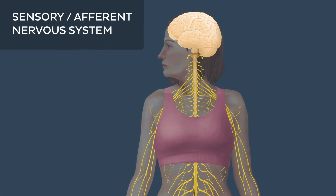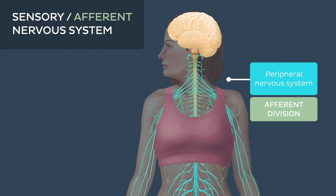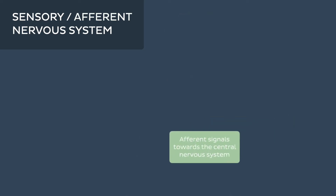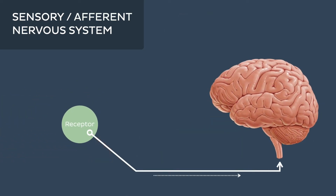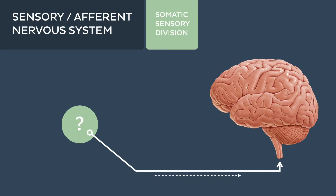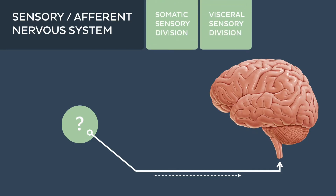Sensory inputs are carried by the afferent division of the peripheral nervous system, meaning sensation is carried towards the central nervous system. Depending on where they originate and what type of information is involved, sensory or afferent signals can be defined according to three classifications: somatic sensory, visceral sensory, and special sensory.